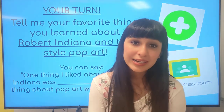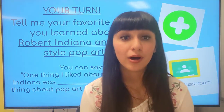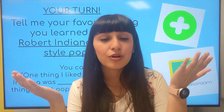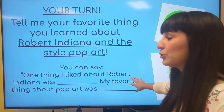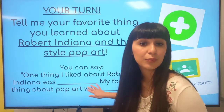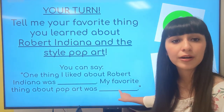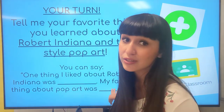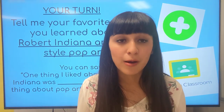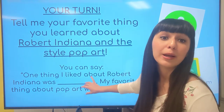For today's assignment, I want you to tell me your favorite thing you learned about Robert Indiana and your favorite thing you learned about pop art — kind of a two-sentence question. You can look at the sentence below: 'One thing I liked about Robert Indiana was blank' and 'My favorite thing about pop art was blank.' Don't forget to include the part about pop art. For example, my favorite thing about pop art was all the bright colors, or that it stands out in a room. Use your details and make sure you're answering both questions.